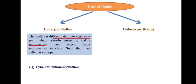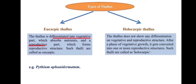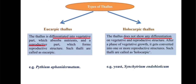In holocarpic thallus, only one type of structure is formed — either the entire thallus will be converted into a reproductive structure or it may convert into a vegetative structure. The word holocarpic comes from 'whole', meaning entire. So the entire thallus converts into either vegetative or reproductive structure. Examples of holocarpic thallus are yeast and Synchytrium endobioticum, both of which contain holocarpic thallus.